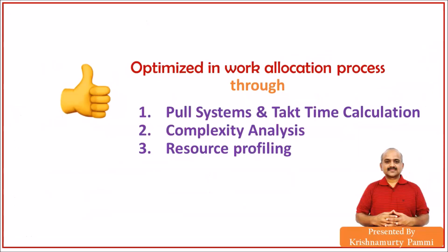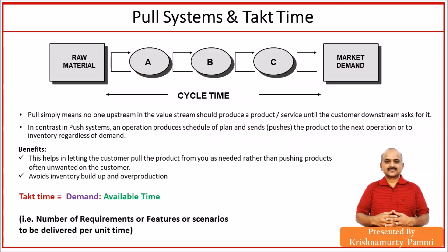Our workflows were changed. The next topic: how did we optimize the work allocation process? We used three things: pull systems and takt time calculation, complexity analysis, and resource profiling.